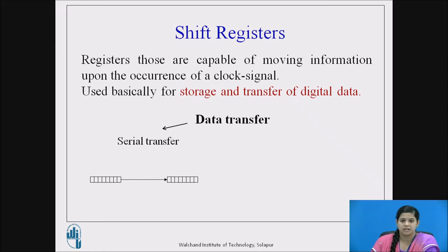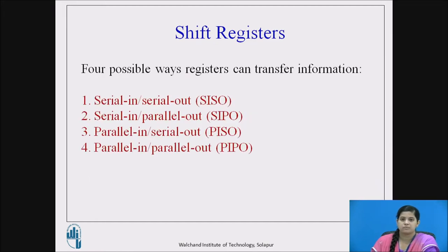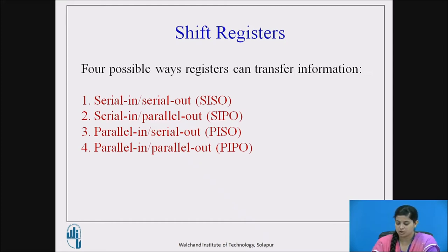There are two types of data transfer. The first is serial data transfer, in which the data is shifted along a single line one by one — that is, one bit at a time. The second type is parallel transfer, in which all the bits can be moved along multiple paths towards the receiver. According to the possible ways, registers can be categorized as serial in serial out, serial in parallel out, parallel in serial out, and parallel in parallel out. We will see the function of these shift registers one by one.